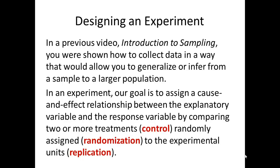Now let's talk about designing an experiment. In an experiment, our goal is to assign a cause and effect relationship between the explanatory and response variables by comparing two or more treatments randomly assigned to the experimental units. To determine whether our treatment had an effect, we need to know what would have happened without the treatment. Experimenters create control groups treated identically in all respects except for the treatment received. A control group may receive a standard treatment compared to a new drug, or a placebo — a drug that looks like the treatment but has no active ingredients.